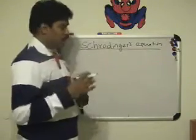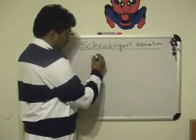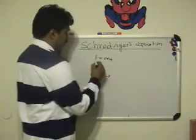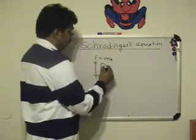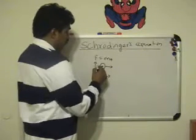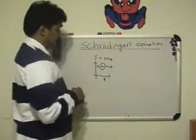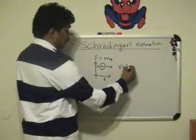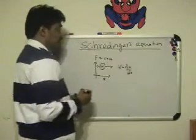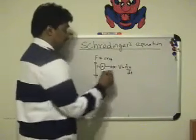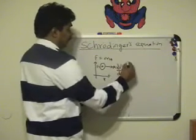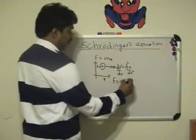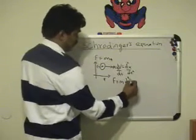Let me go through some basic equations. According to Newton's second law, F equals ma. If an object of mass m is moving in the direction x, and the net force on this object is F, then the velocity of that object is dx/dt — the rate of change of displacement — and the acceleration is the rate of change of velocity, which is dv/dt, or d²x/dt². So F equals m times d²x/dt².